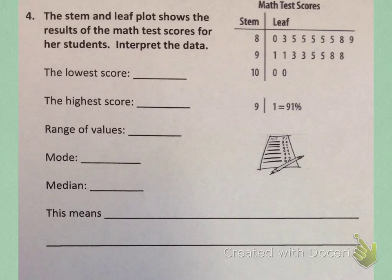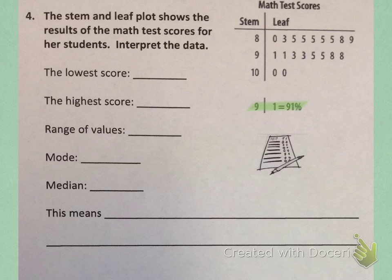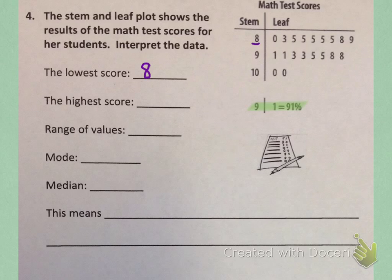Now let's look at the next problem. The stem and leaf plot shows the results of math test scores. The first thing we need to do is look at the key. The key tells us that the stem is the 10's place and the leaf is the 1's place, and we're measuring in percent. The lowest score is the first value listed. The first stem is 8 and the first leaf is 0, so the lowest score on the test is 80%.